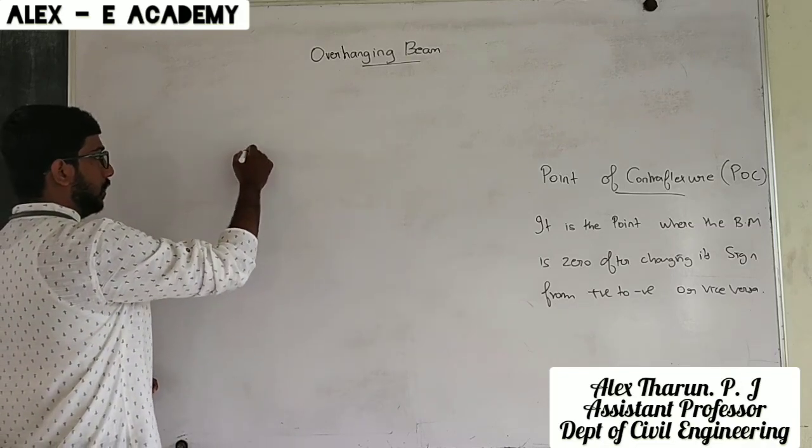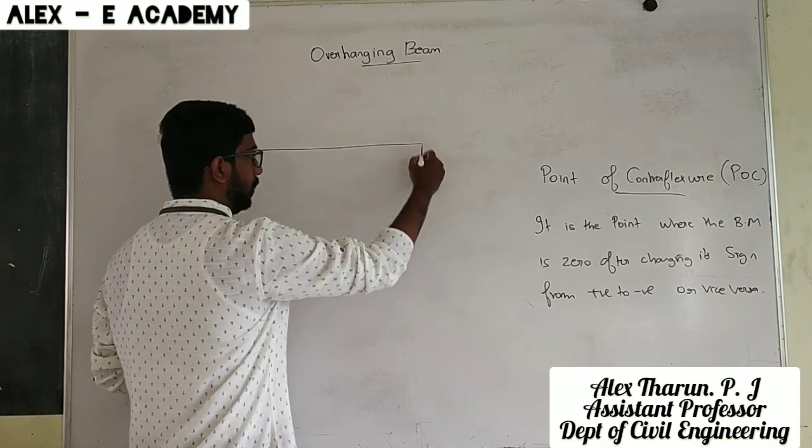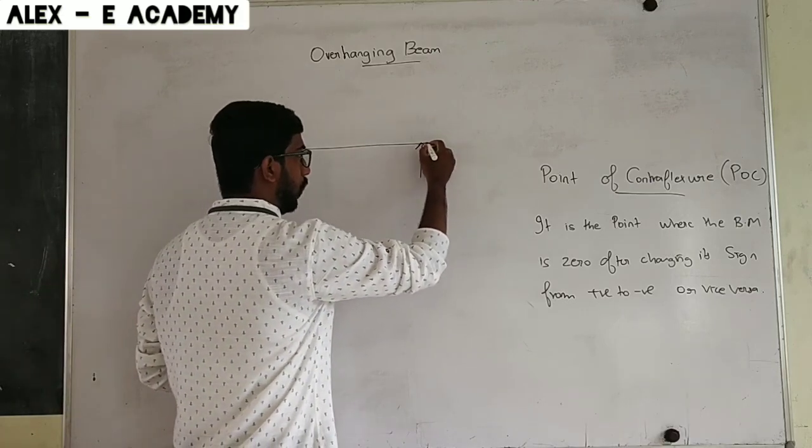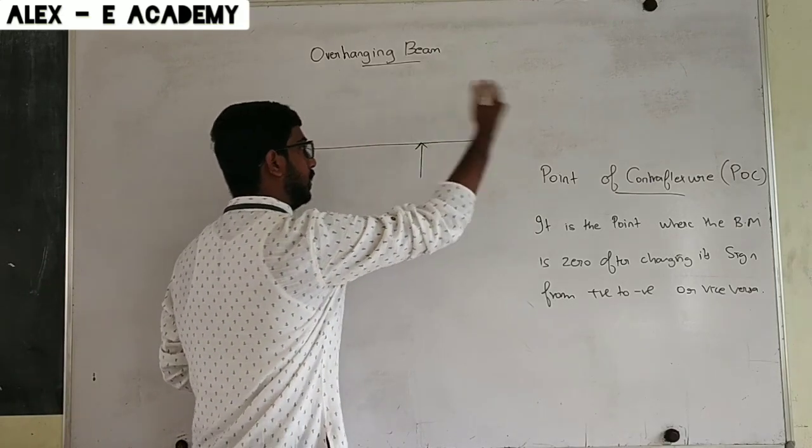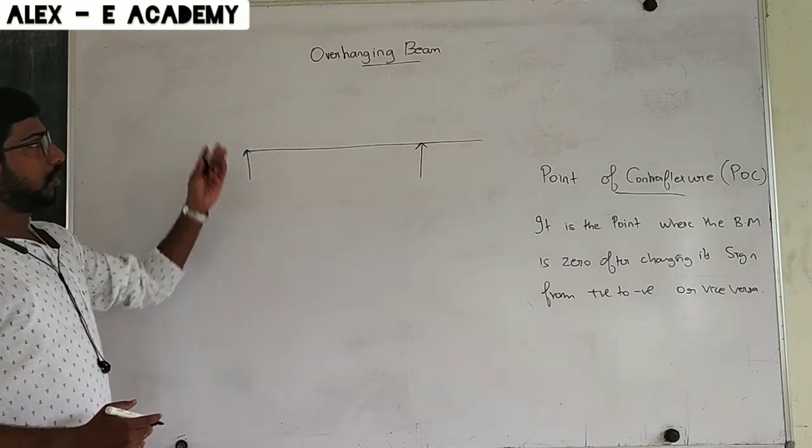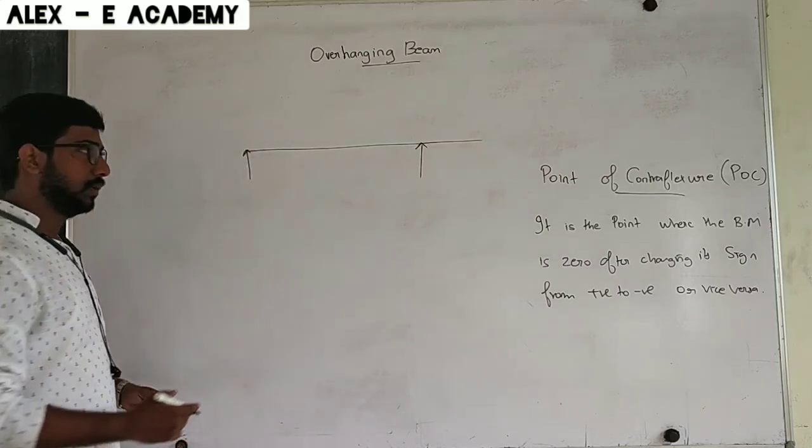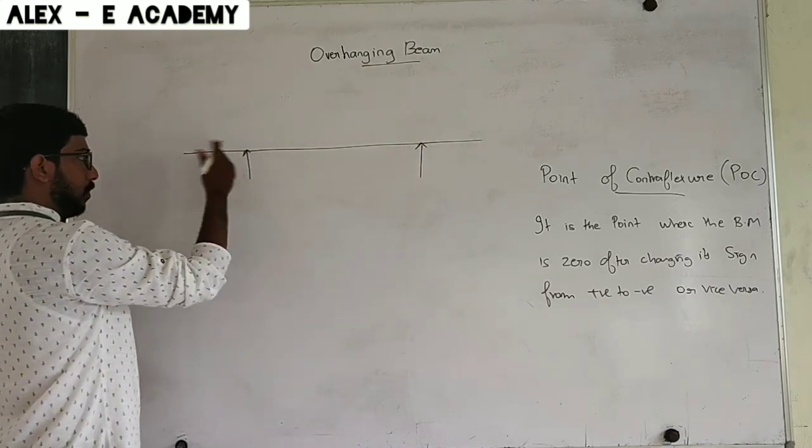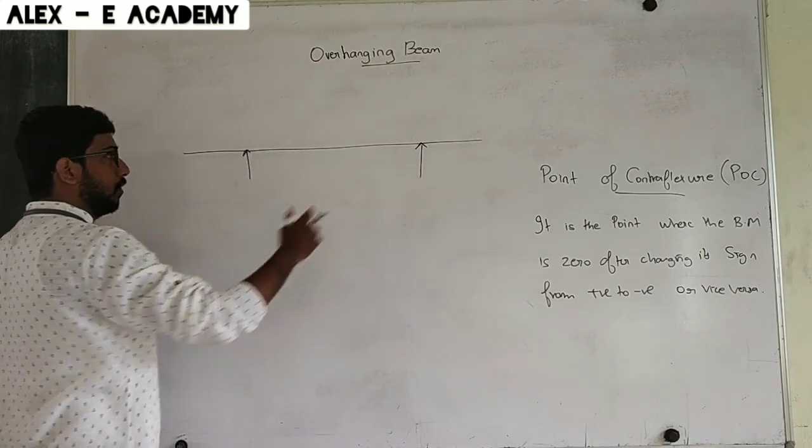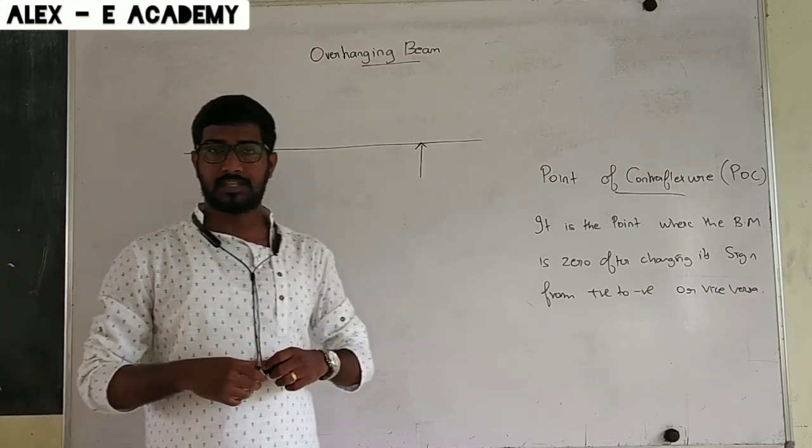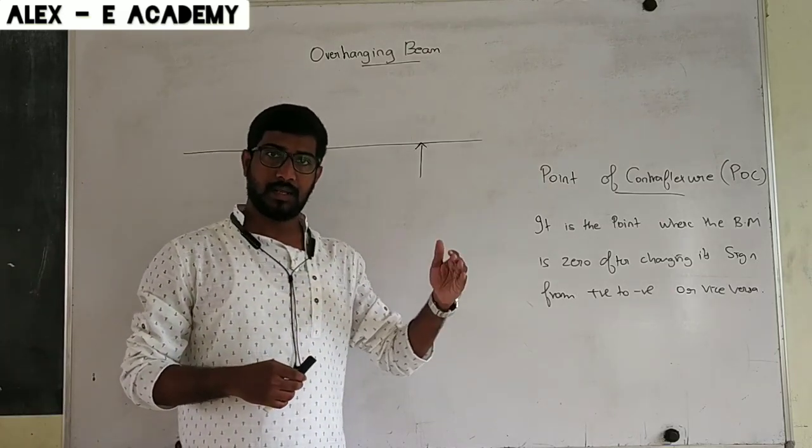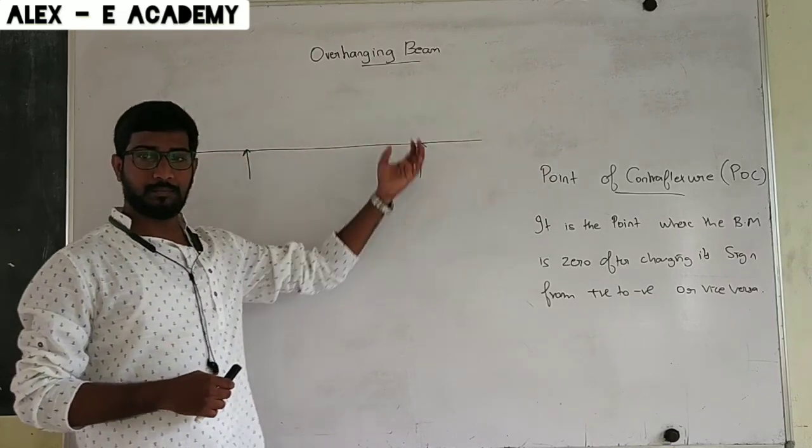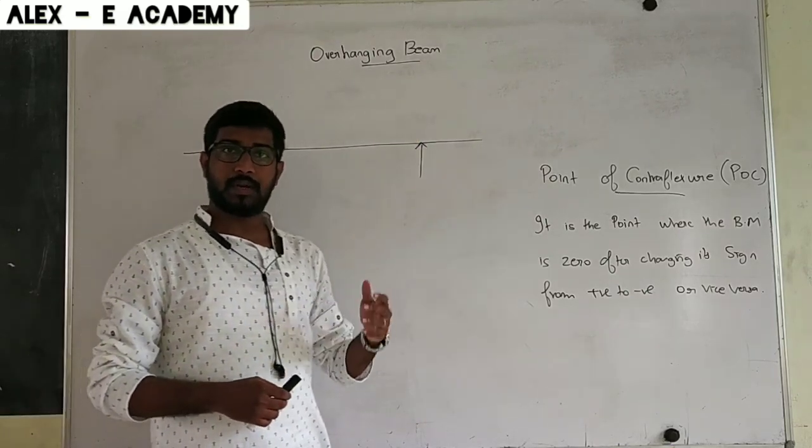Regarding simply supported beam versus overhanging beam - that is right side or left side overhang. If a beam is projected or extended beyond its supports, then that type of beam is known as an overhanging beam.